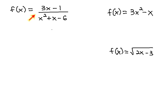For example, this first function f(x) equals 3x minus 1 over x squared plus x minus 6. Notice we're working with a fraction with a numerator and denominator. We can ask ourselves, what is not allowed to happen in a fraction? In a fraction, we are not allowed to have the denominator equal zero. This would make the function undefined.